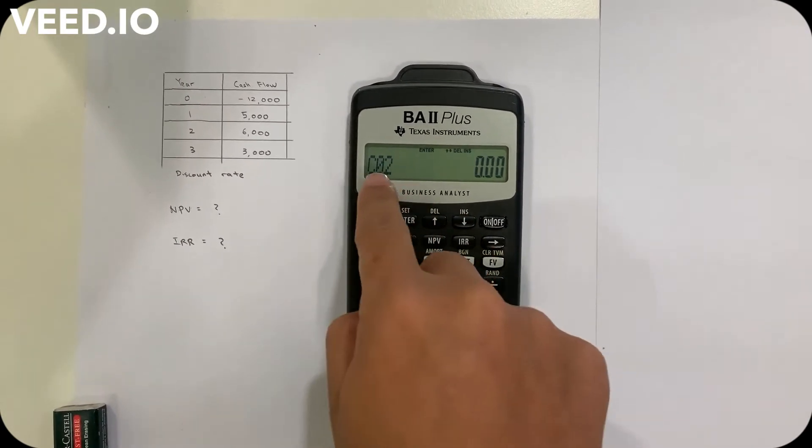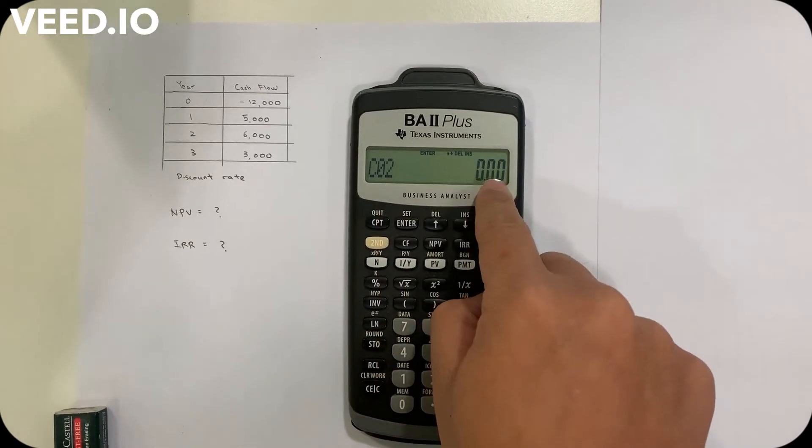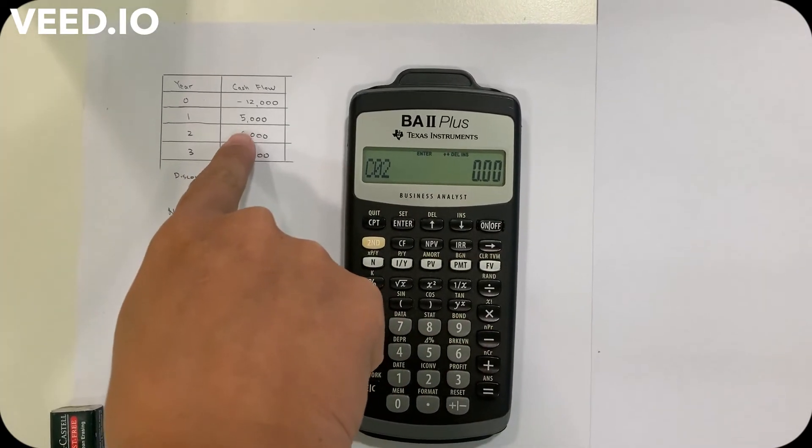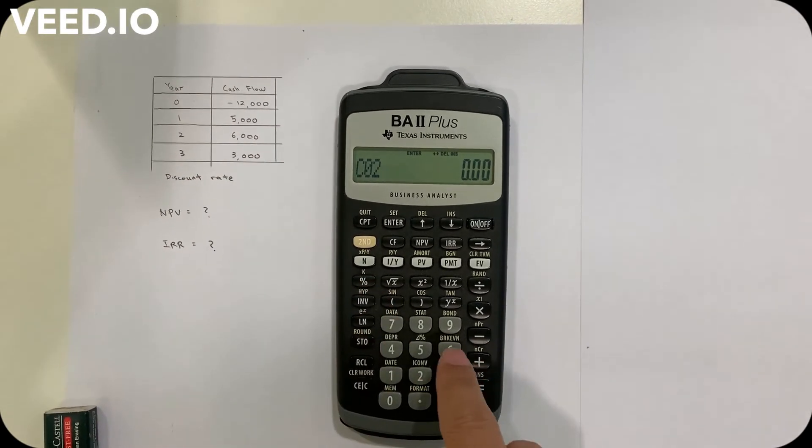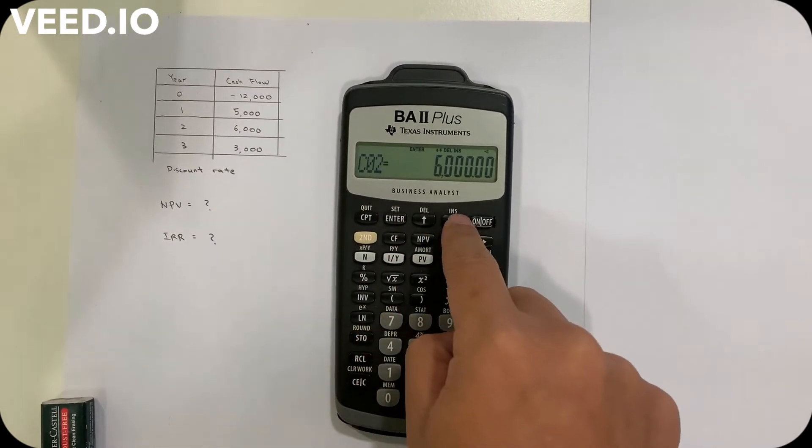For year two, keep going down again to see C02. This is where I key in the cash flow in year two, 6,000, then press enter and going down again.